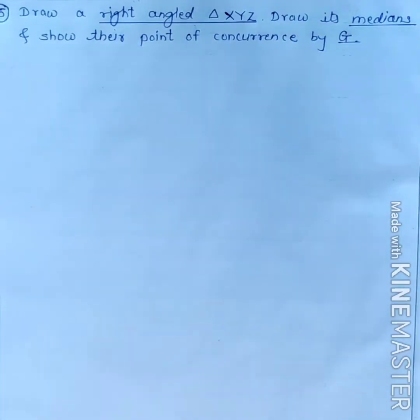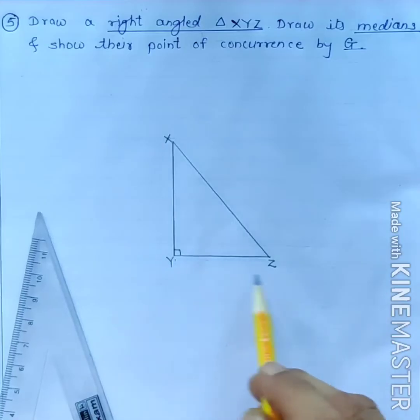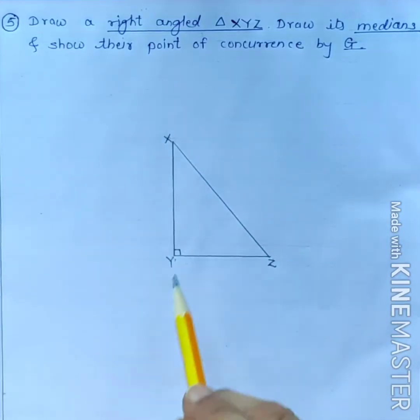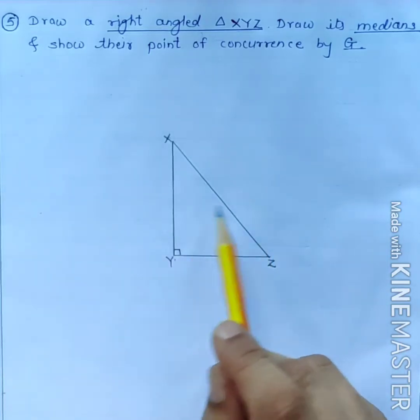Draw right angle triangle. Triangle XYZ is a right angle triangle in which angle Y is a right angle. We have to draw medians of this triangle XYZ.